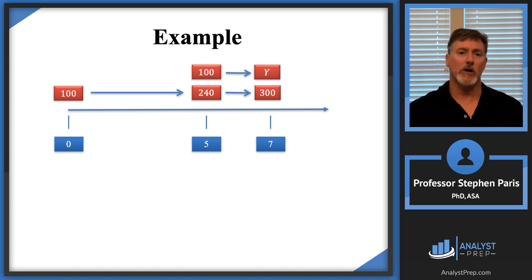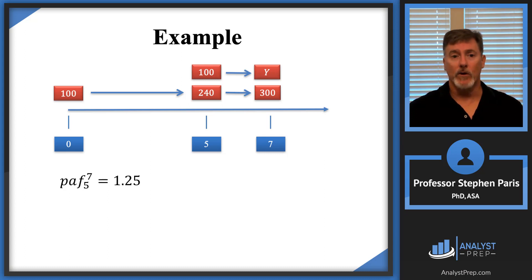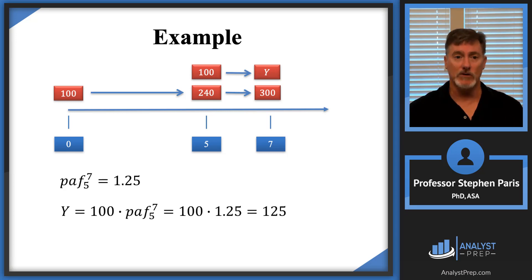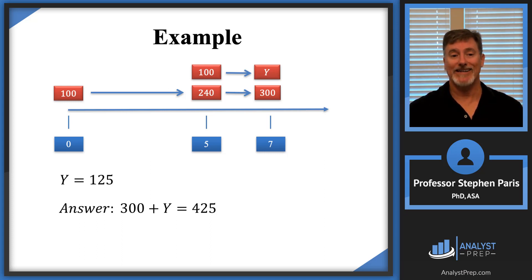Going back to our original timeline, I can now determine cap Y. The periodic accumulation factor from time 5 to time 7 is 1.25, so cap Y equals 100 times 1.25, giving cap Y equal to 125. That gives a final answer of 425 as how much money is in the account at time 7.